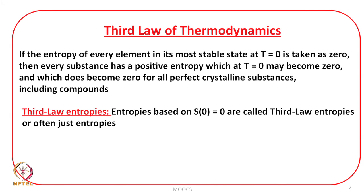The entropy does become zero for all perfect crystalline substances including compounds. Entropies based upon S₀ = 0 are called third law entropies. By this definition, we say that at absolute zero all perfectly crystalline substances including compounds have entropy equal to zero.